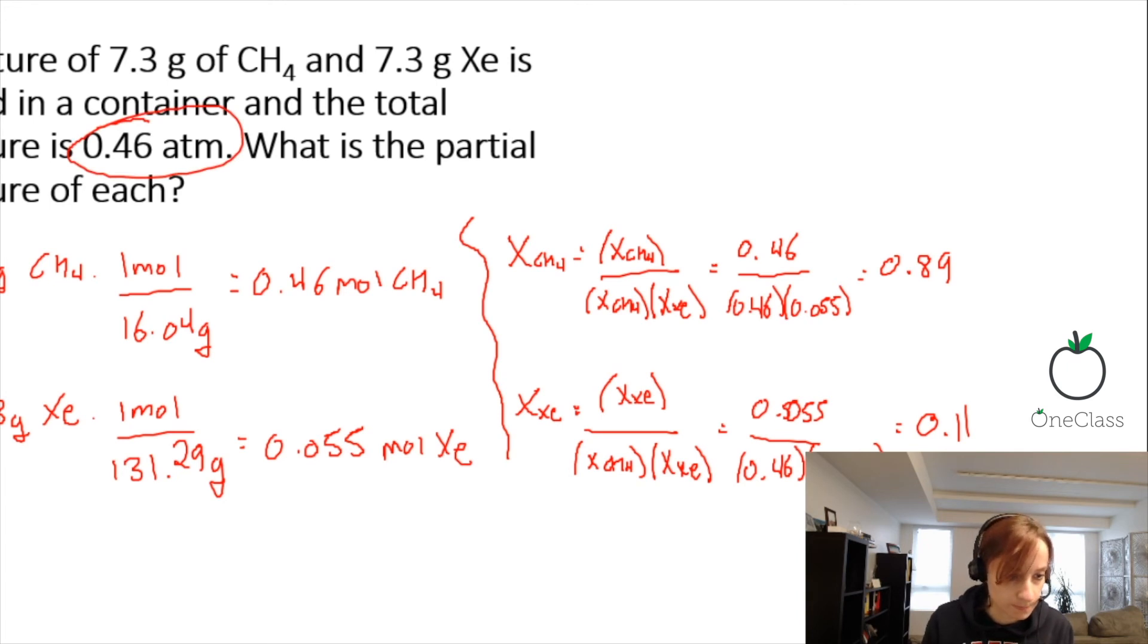It already gave us the total pressure in the question. So using this formula, the partial pressure of methane is going to equal the mole fraction of methane times the total pressure. So that is going to be 0.89, which we just calculated, and our total pressure is 0.46 atmospheres. So this gives you 0.41 atmospheres is your partial pressure of methane.